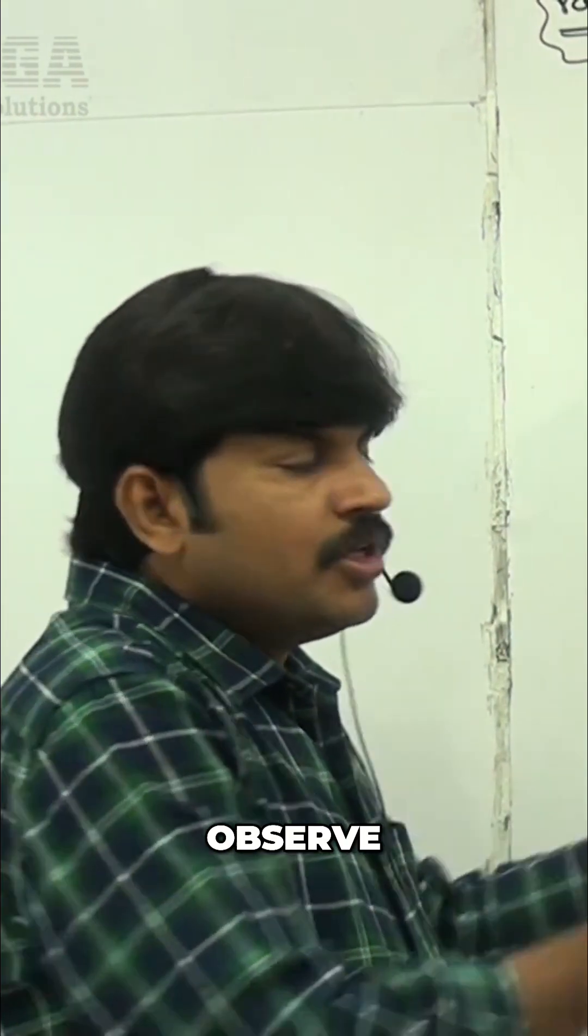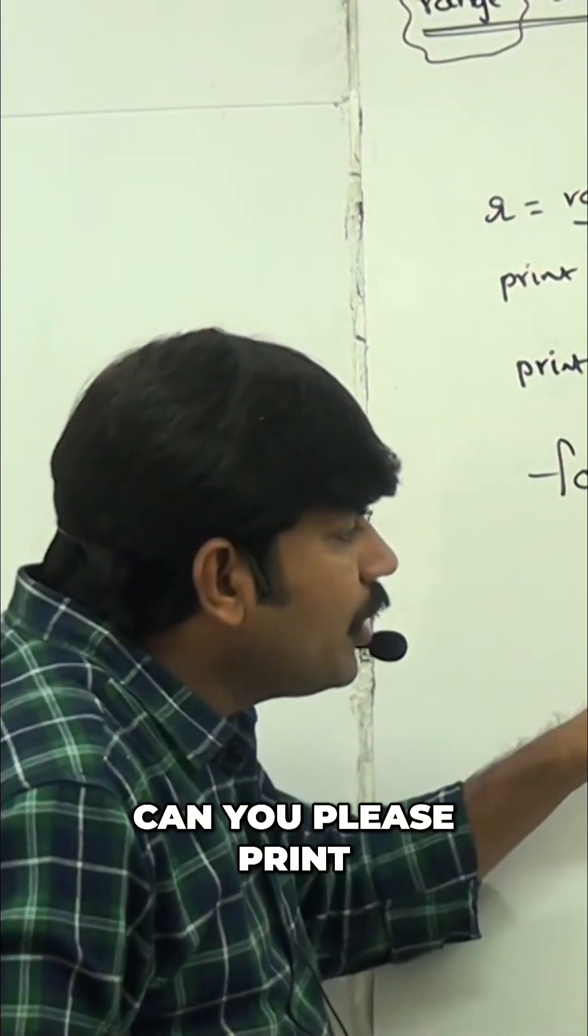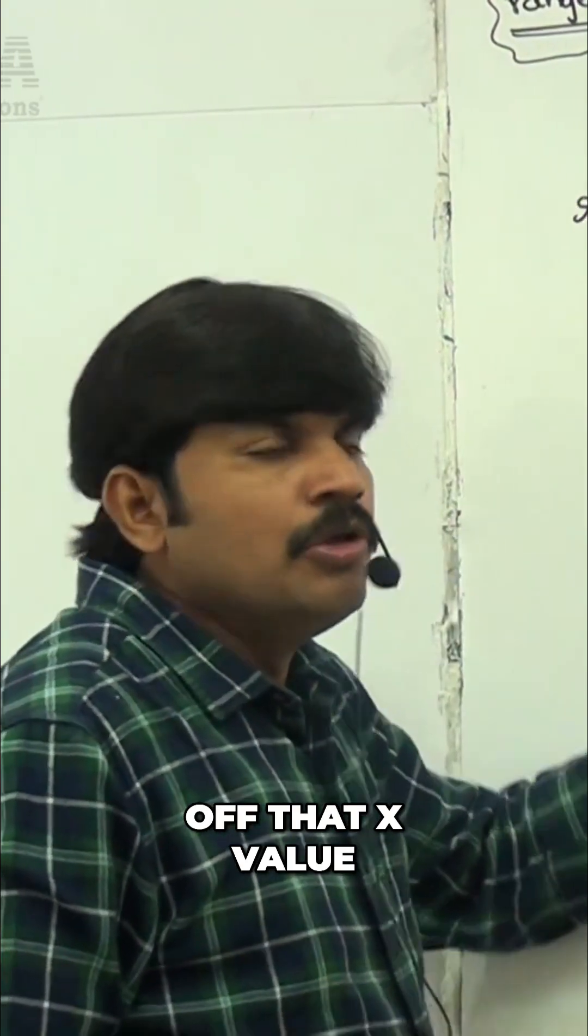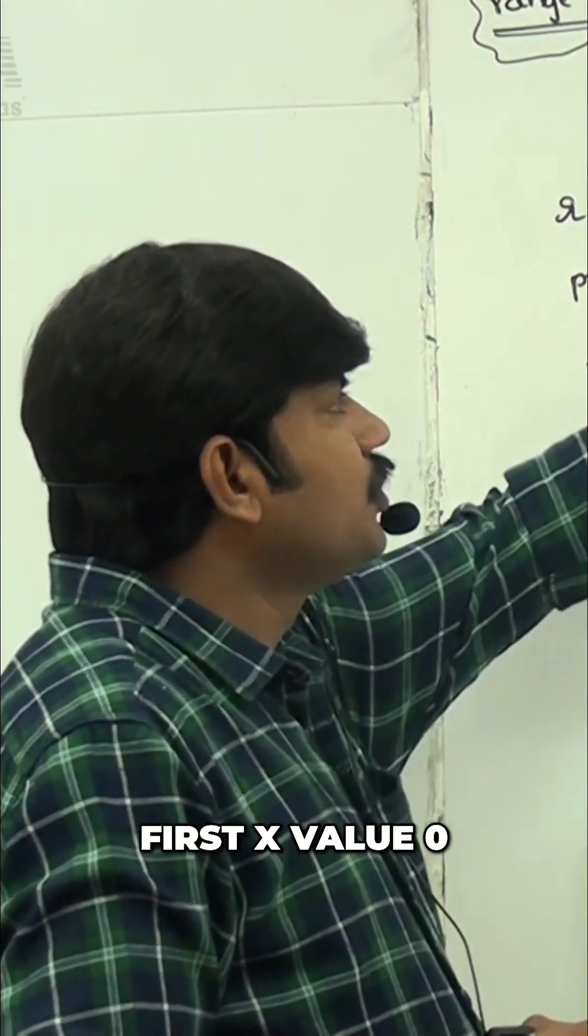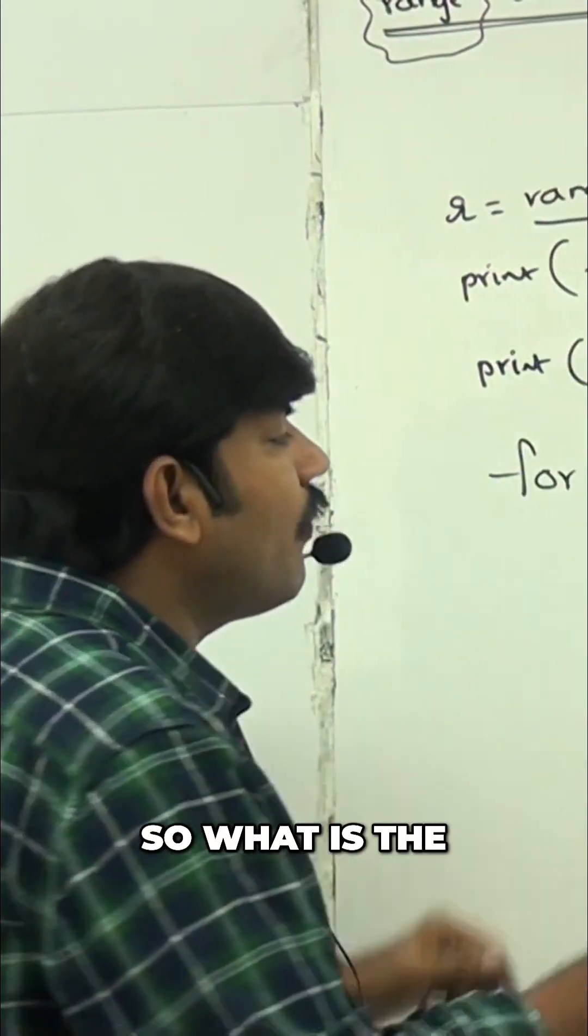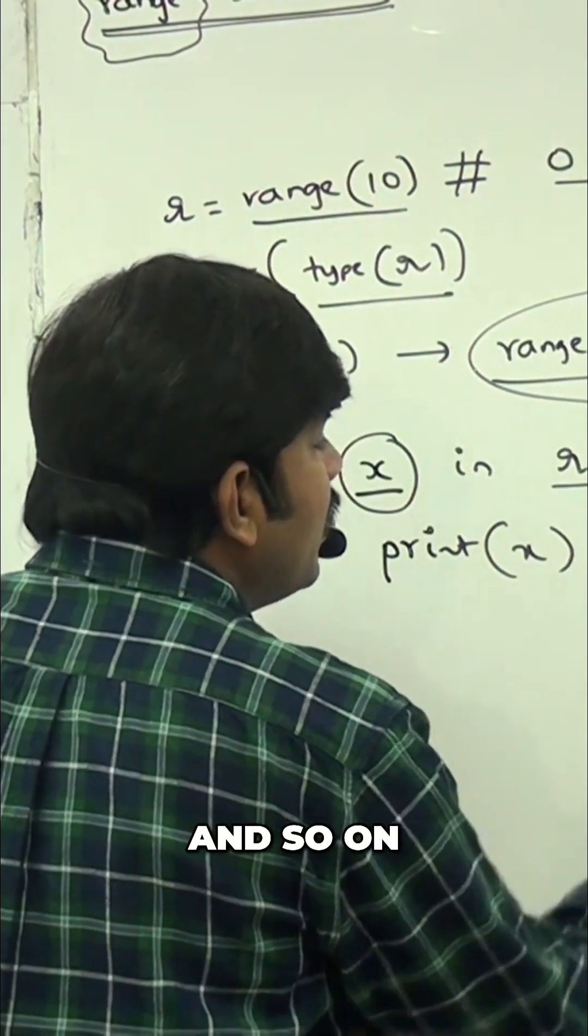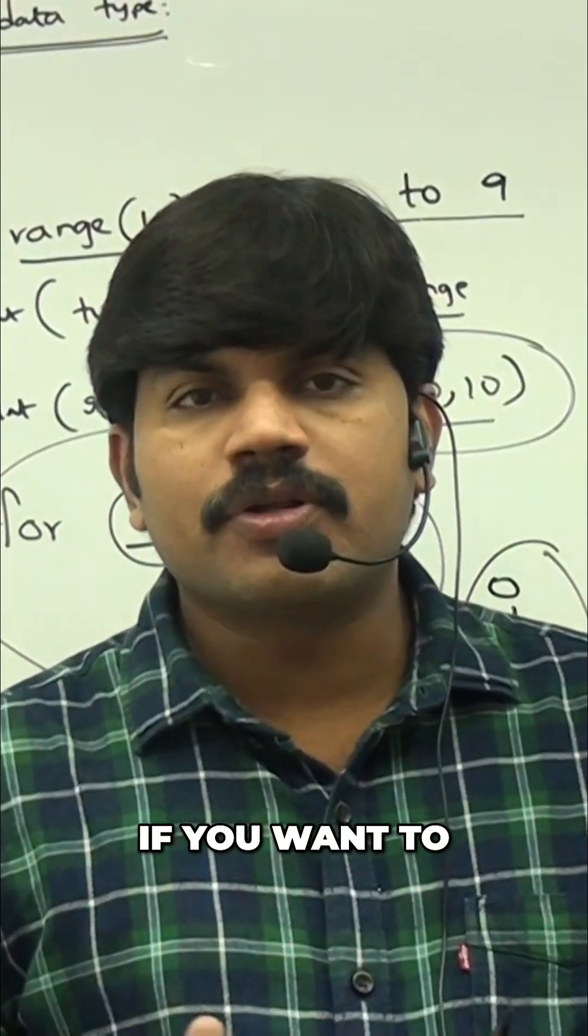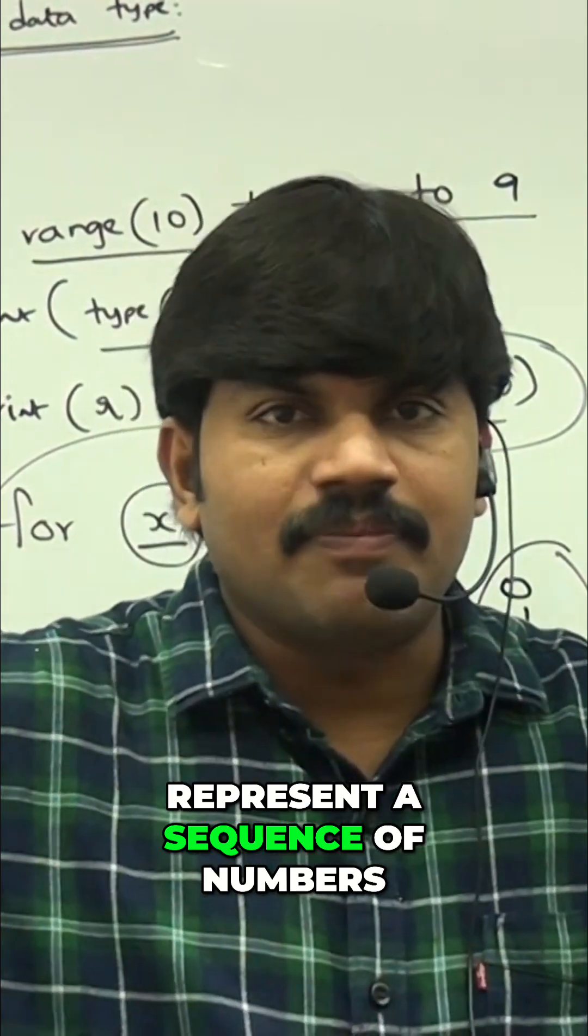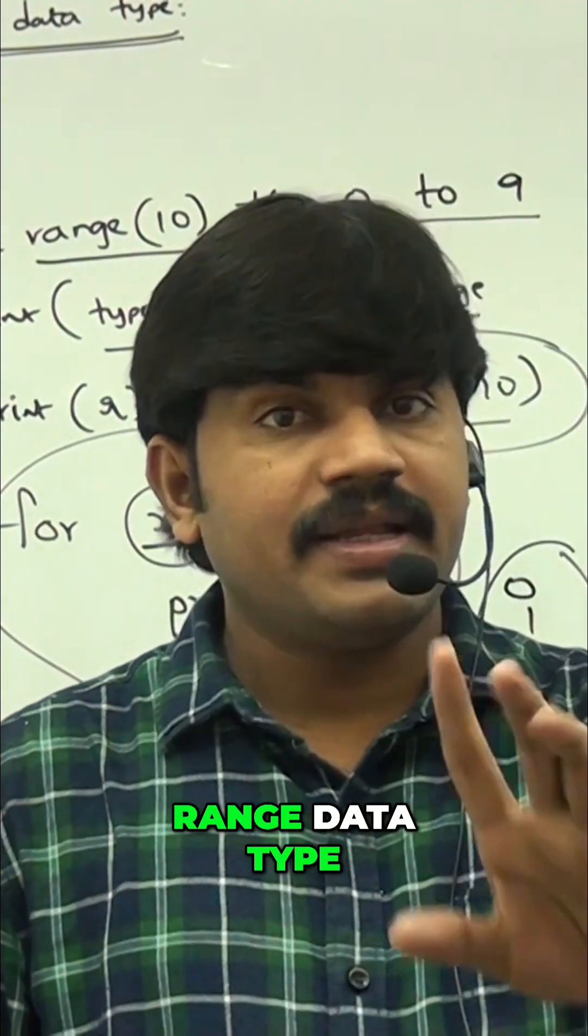Can you please print? Observe every x value present inside r. Can you please print off that x value? First x value 0, next x value 1, next x value 2. So what is the output we are going to get? Sir, 0, 1, 2, 3, and so on, 9 we are going to get. If you want to represent a sequence of numbers, sir, a range of numbers, sir, then we have to go for one range data type.